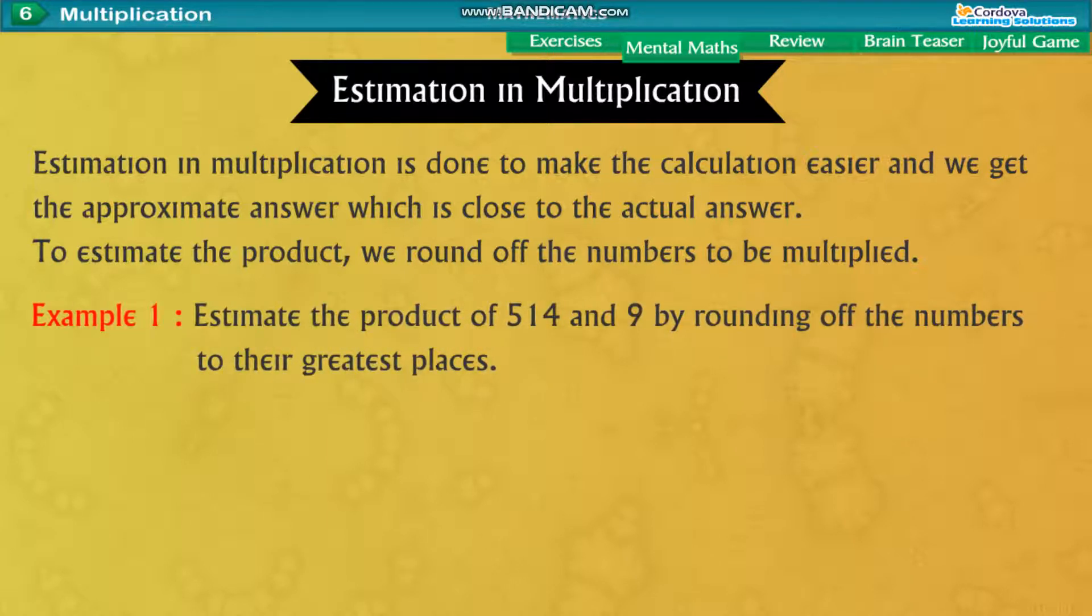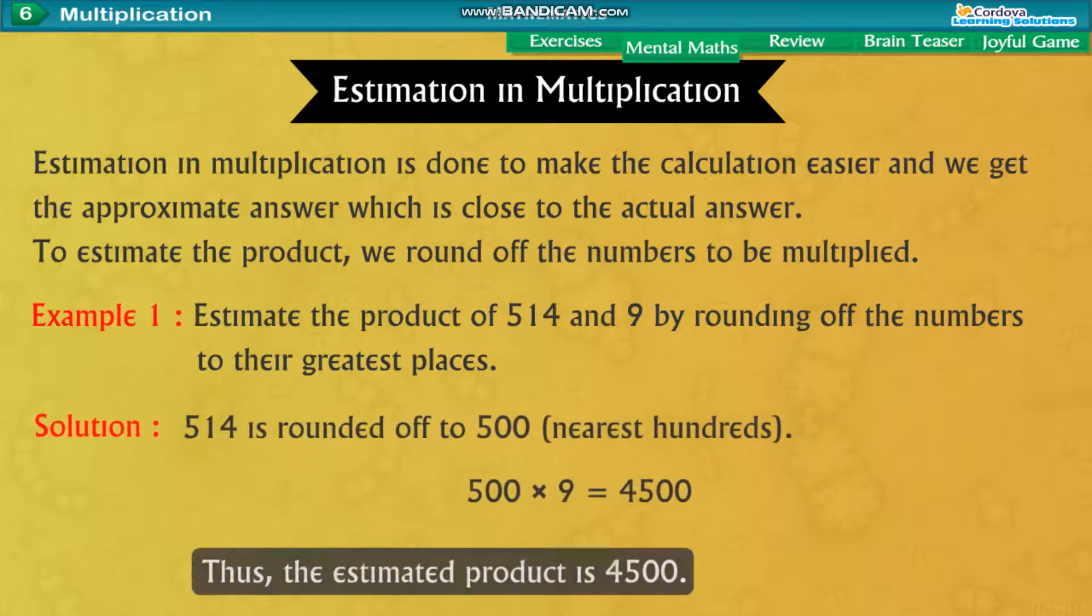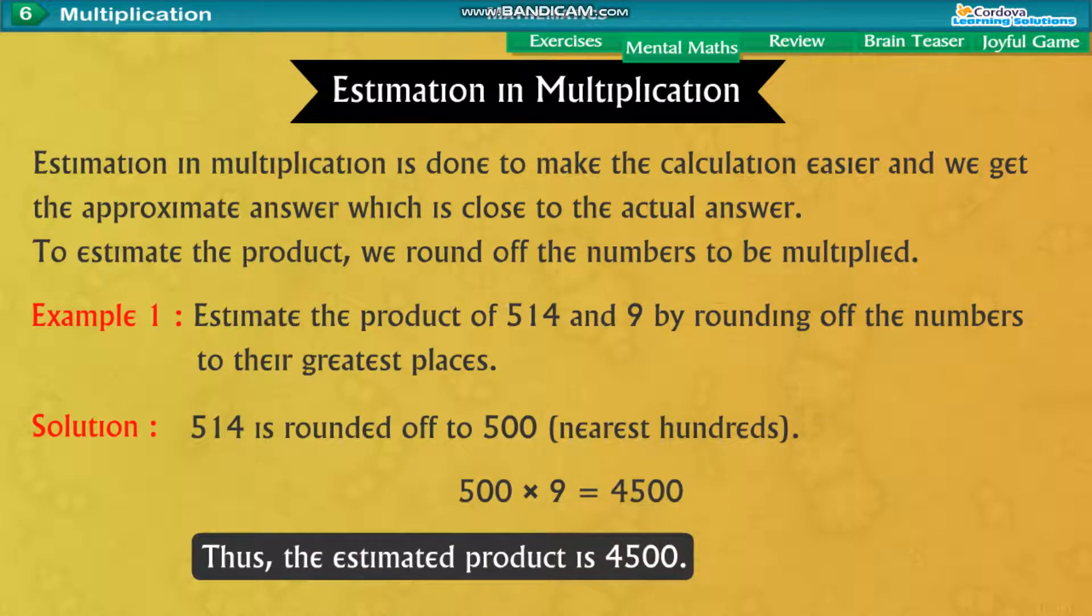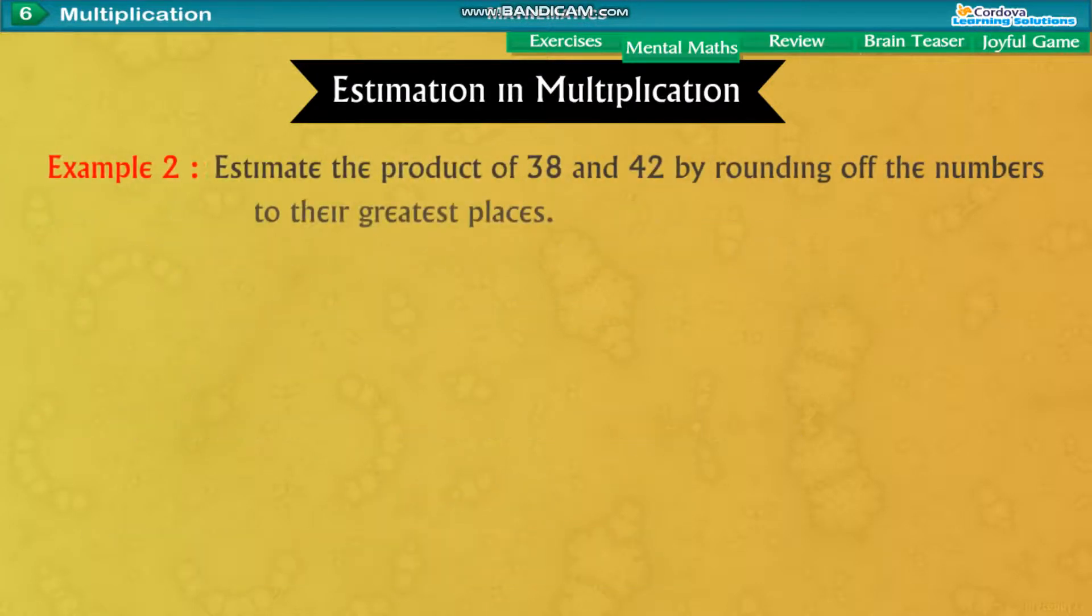Example 1. Estimate the product of 514 and 9 by rounding off the numbers to their greatest places. Solution. 514 is rounded off to 500 nearest hundreds. 500 into 9 equal to 4500. Thus, the estimated product is 4500.